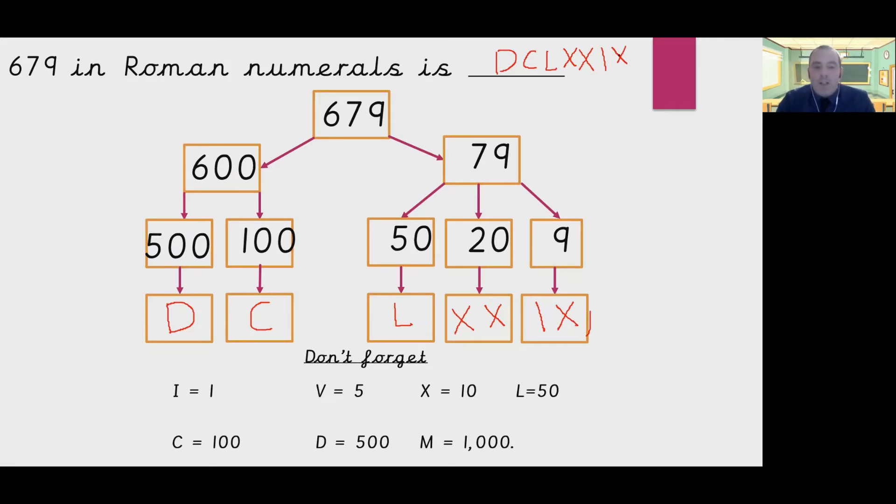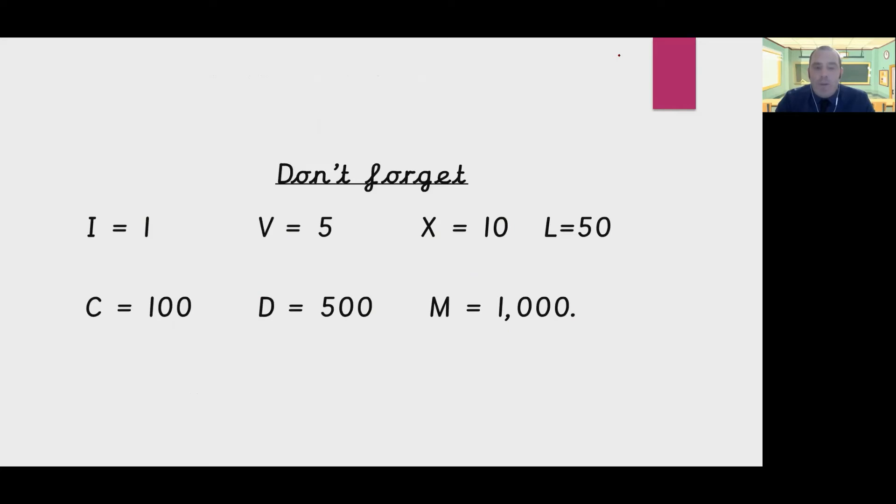So what you need to do is look at the numbers, the values we've got for Roman numerals, and split your number, partition your number using the facts that you know. So before we go, just to remind you, nice and big on the screen, I is worth 1, V is worth 5, X is worth 10, L is worth 50, C is 100, D is 500, and M is 1000.